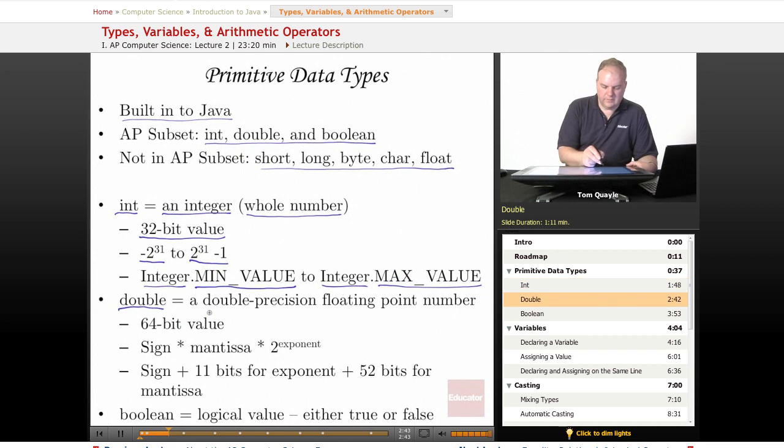Double is a double precision floating point number. Now, floating point number means that it has a number that has a decimal point, so it can have a decimal portion.